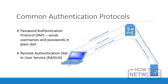Remote Authentication Dial-In User Service, RADIUS, is an open standard protocol that provides centralized remote access authentication, authorization, and auditing services. When a network contains multiple remote access servers, they can all be configured to point to one central RADIUS server. The remote access servers, then acting as RADIUS clients, forward authentication requests to the RADIUS server for verification against the authoritative database of users.